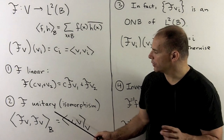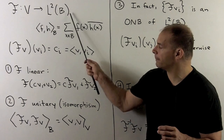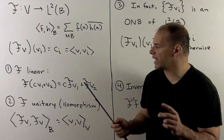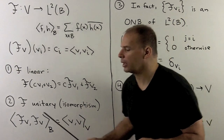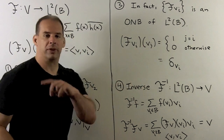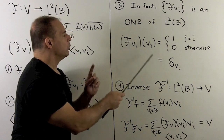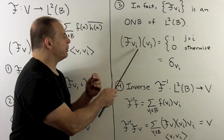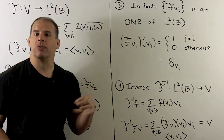F is unitary with respect to the inner product on L2 of B (with no normalization out in front), meaning F preserves the inner product. This is just a restatement of Parseval's identity, and since F is unitary, it's an isomorphism. For an orthonormal basis for L2 of B, we can use F(v_i), where the v_i are from the original basis. We note F(v_i) applied to v_j gives 1 if j=i and 0 otherwise, so applying F to an original basis vector produces a delta function. Without normalization, the delta functions form an orthonormal basis.